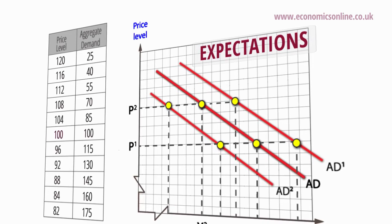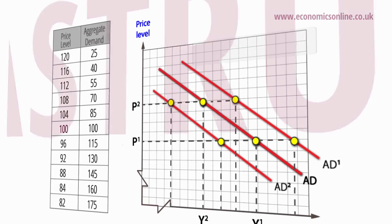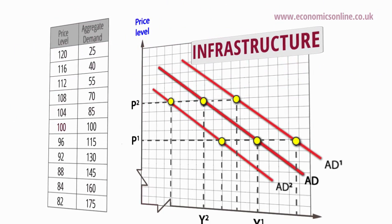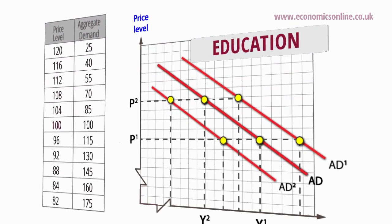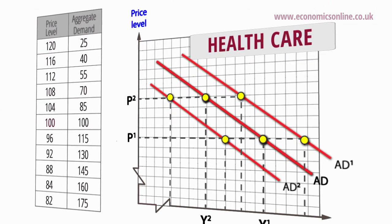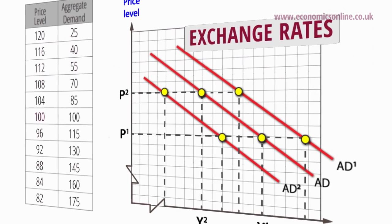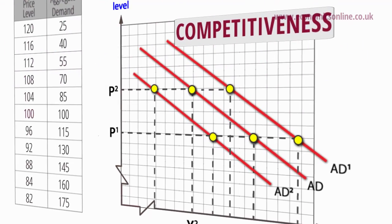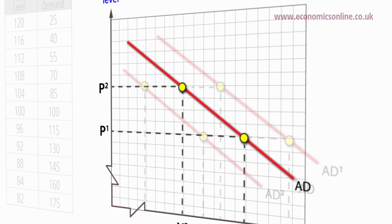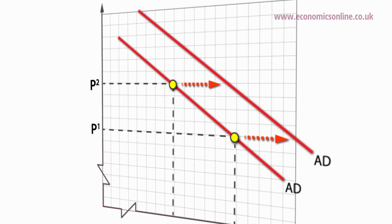Shifts in AD can also arise from decisions by governments to spend more or less, for example on infrastructure projects or on education and healthcare. Finally, shifts can arise from changes in net exports, such as those caused by changes in exchange rates or a country's competitiveness. The fall in sterling after Brexit gave a short-term boost to UK exports and shifted AD to the right.